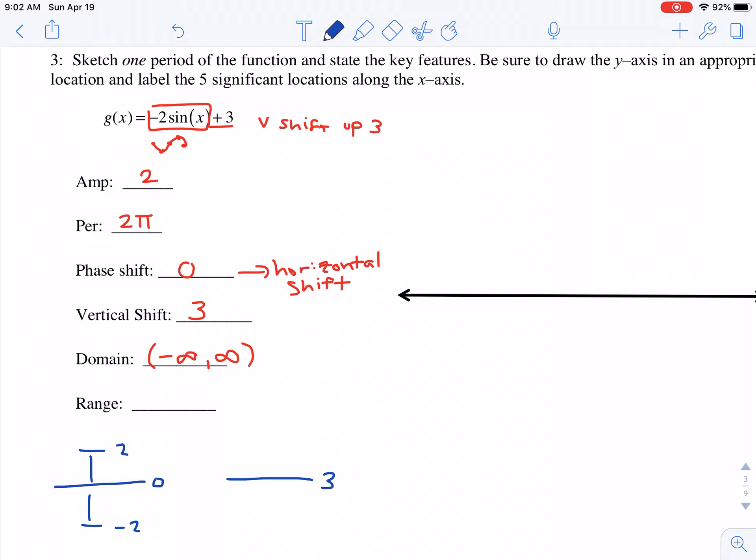And so when it goes up two from that, we're going to reach all the way up to five, and when it goes down two from that, we're going to reach all the way down to one. So notice the shift up three affects all three of these values, the midline, the maximum, and the minimum. So our range is now going to go from one until five.